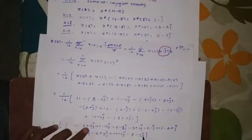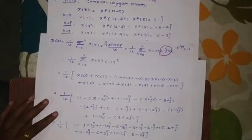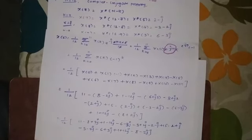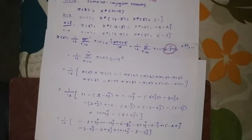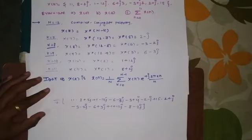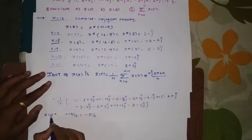All the imaginary terms cancel. Adding the real terms: 11 minus 8 plus 1 minus 6 minus 3 minus 2 plus 15 minus 2 minus 3 minus 6 plus 1 minus 8 equals minus 10. So x(6) equals minus 10 divided by 12, which simplifies to minus 5 by 6. This is our value of x(6).